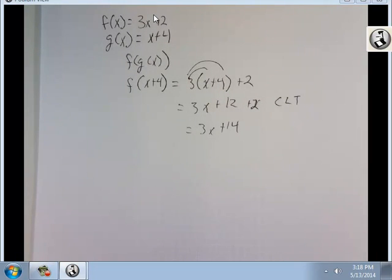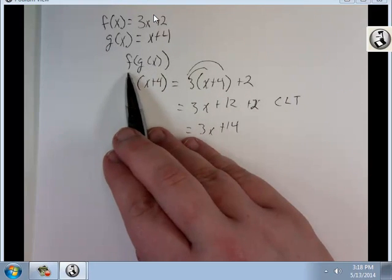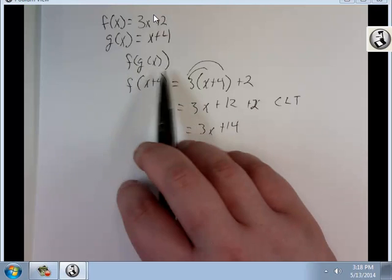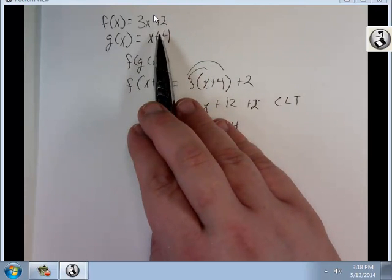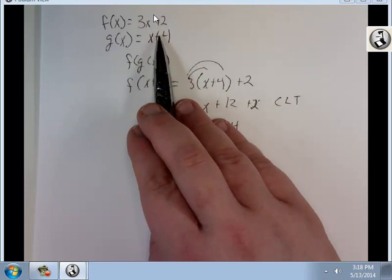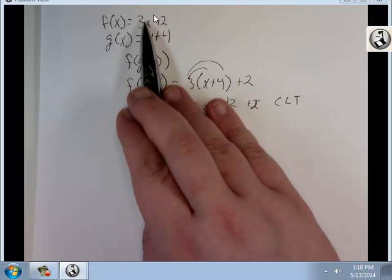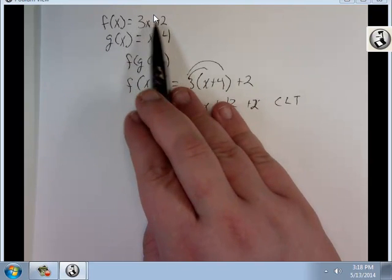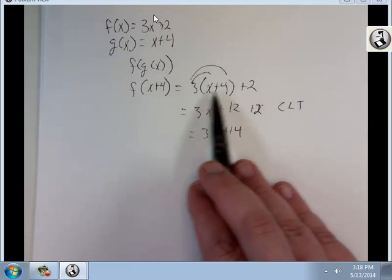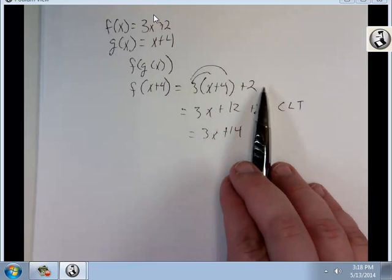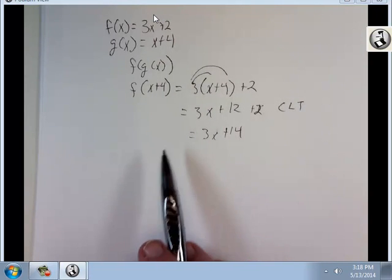Let me step back and go over what I did. I wanted f of g of x, so I took g of x — which is x plus 4 — and substituted that into f of x, which is 3x plus 2. So I got 3 times (x plus 4) plus 2, which gives 3x plus 12 plus 2, which is 3x plus 14.